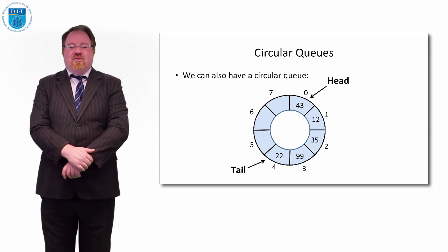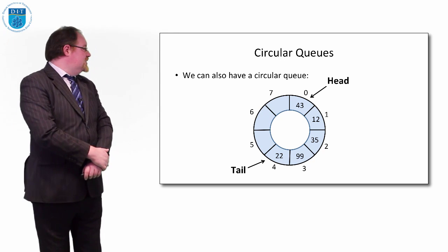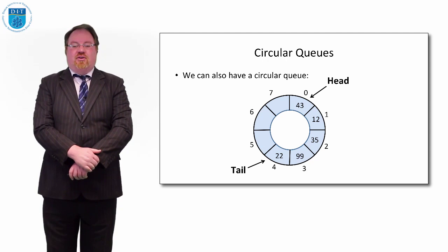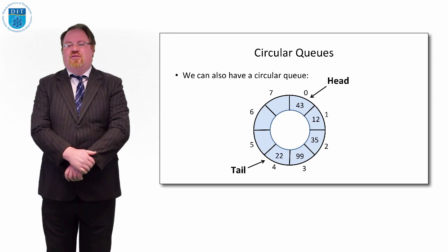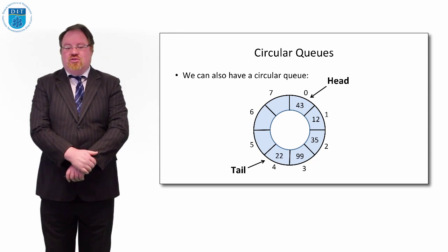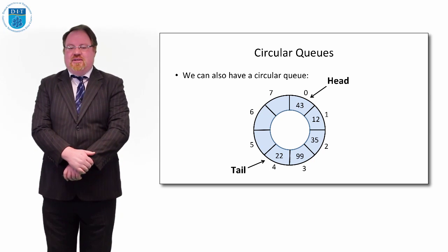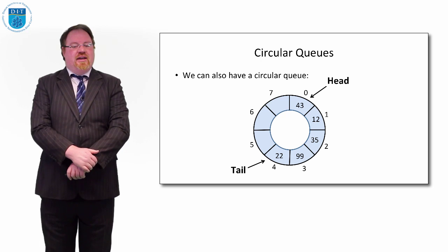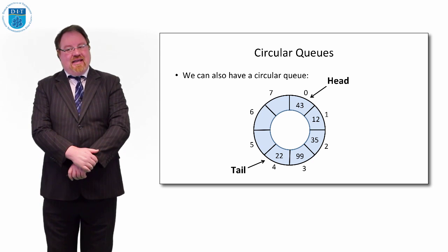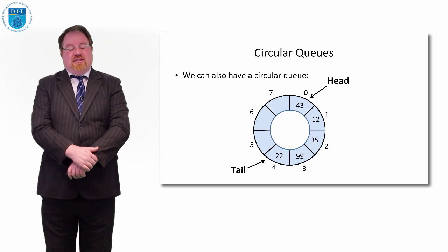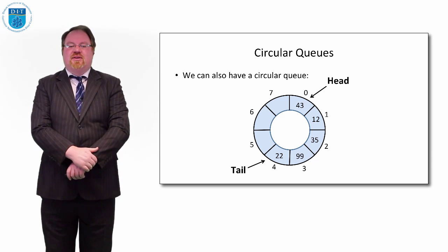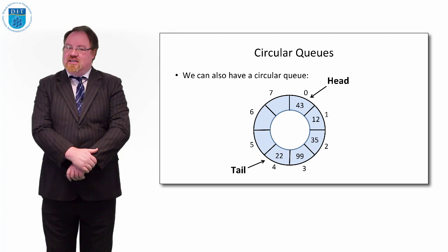Let's look at the picture. We have indices 0 through 7 all around the periphery of the array, and 7 is connected back to 0 again with two pointers. Head is pointing to the zeroth element, the same as usual, and tail is pointing to the fourth element. The key with the circular array is: if I take elements away from the head, I can keep adding them onto the tail, and when I get to the seventh element — the back of the array — if the zeroth element is free, I can write into the zeroth element.